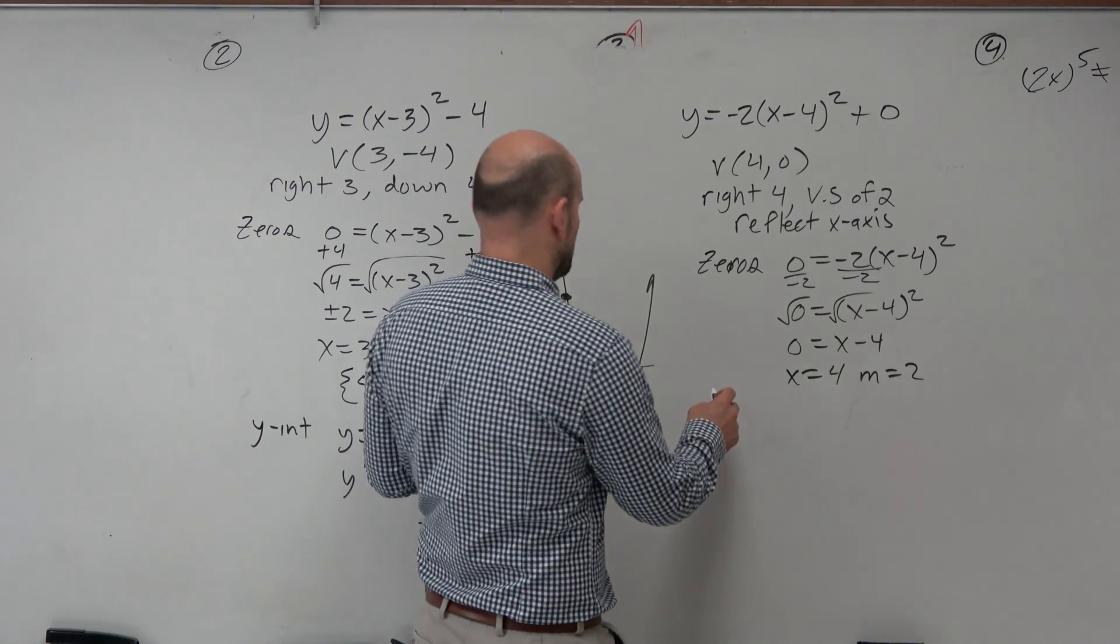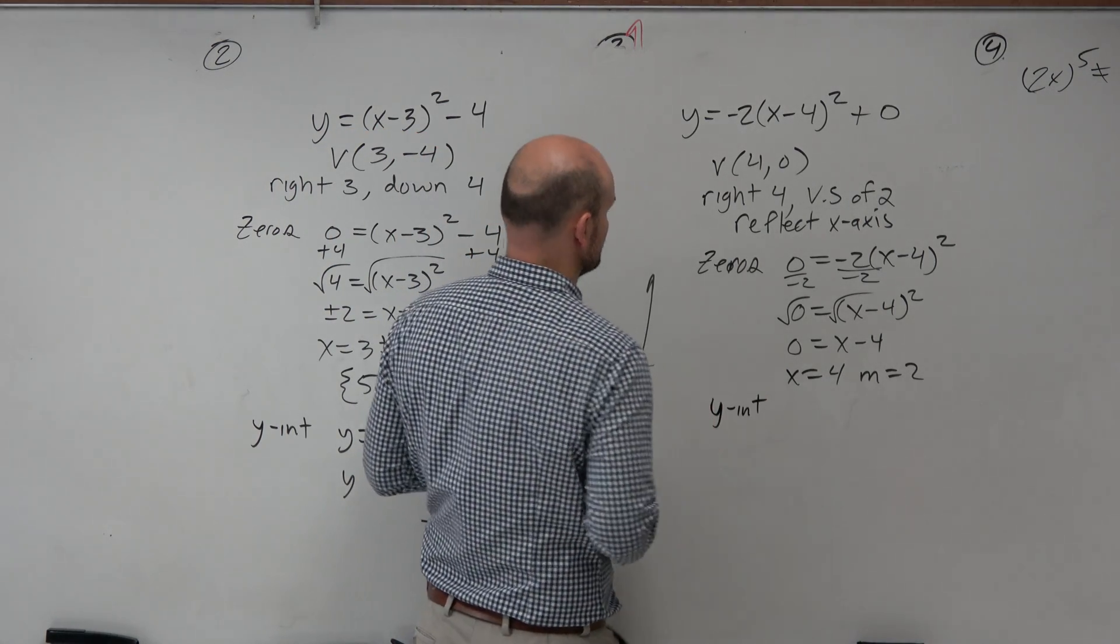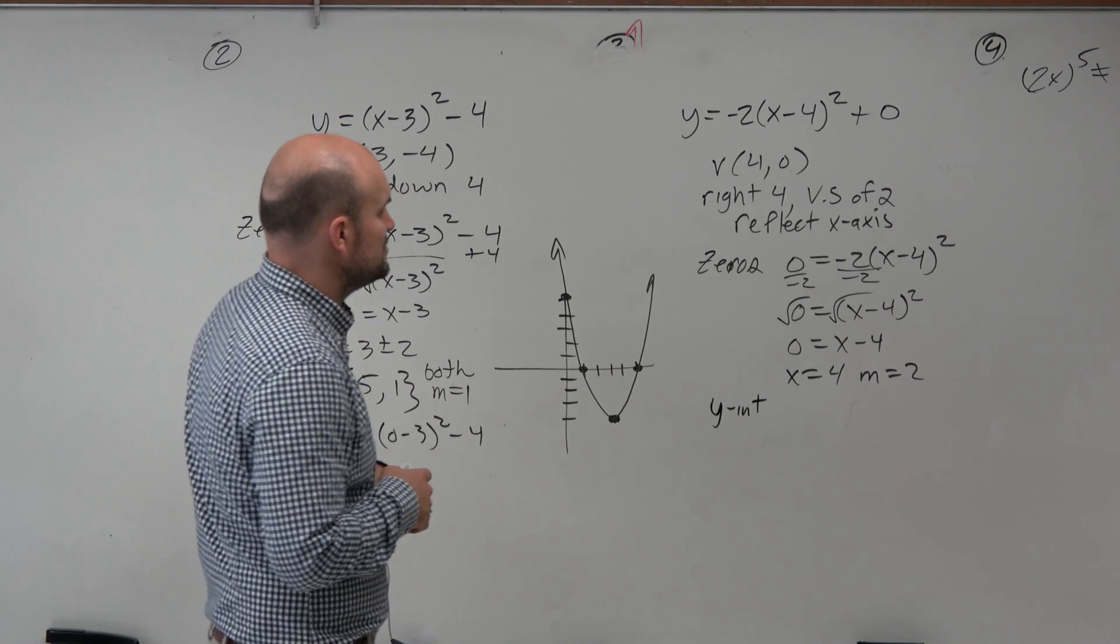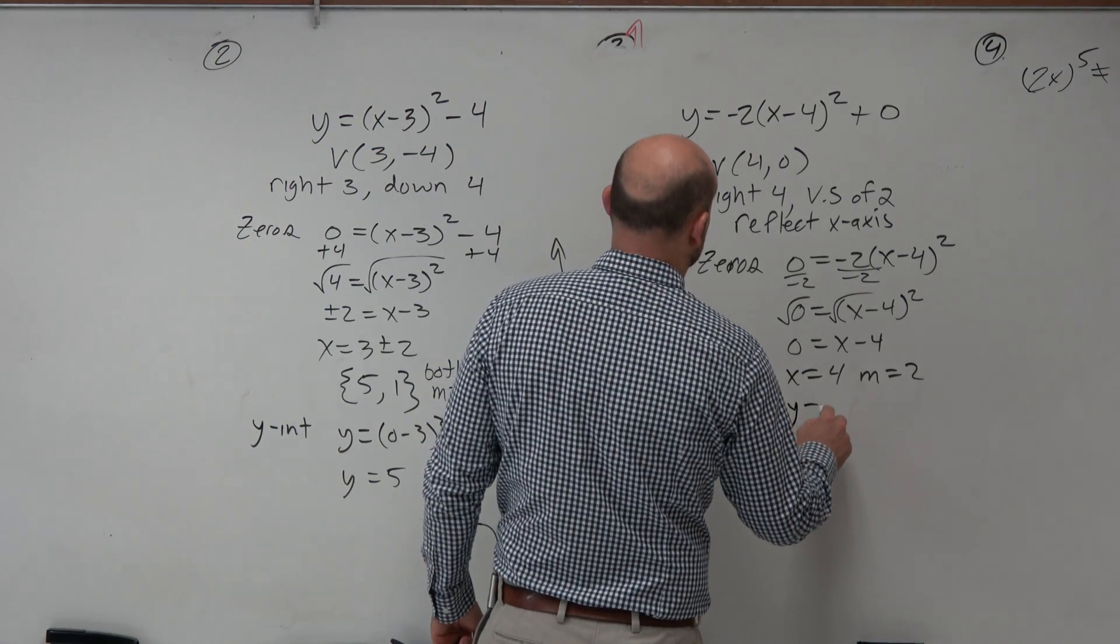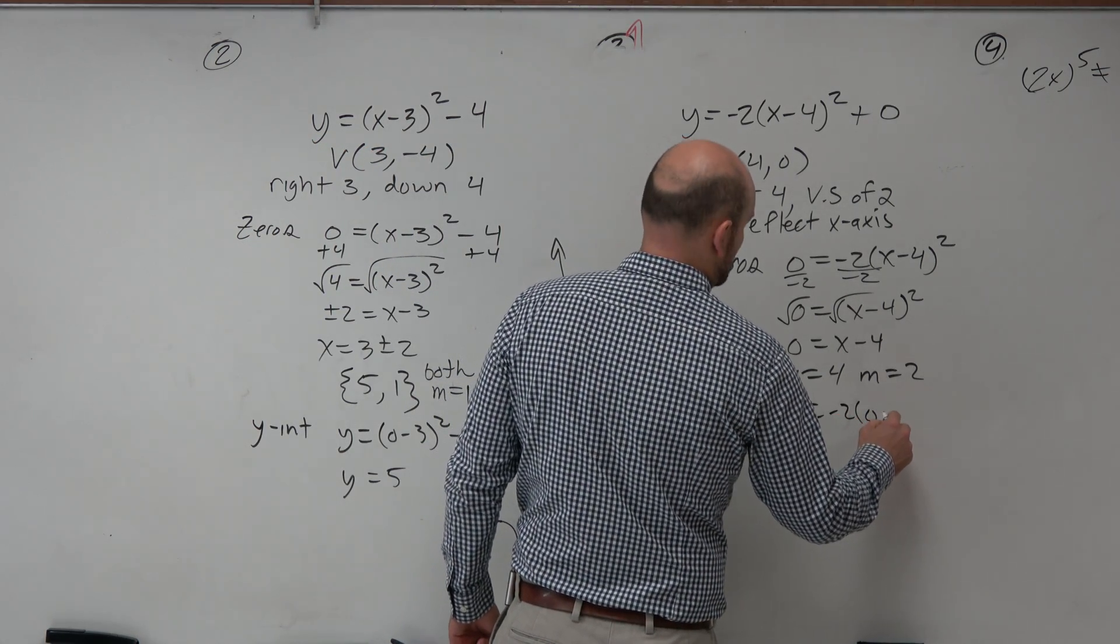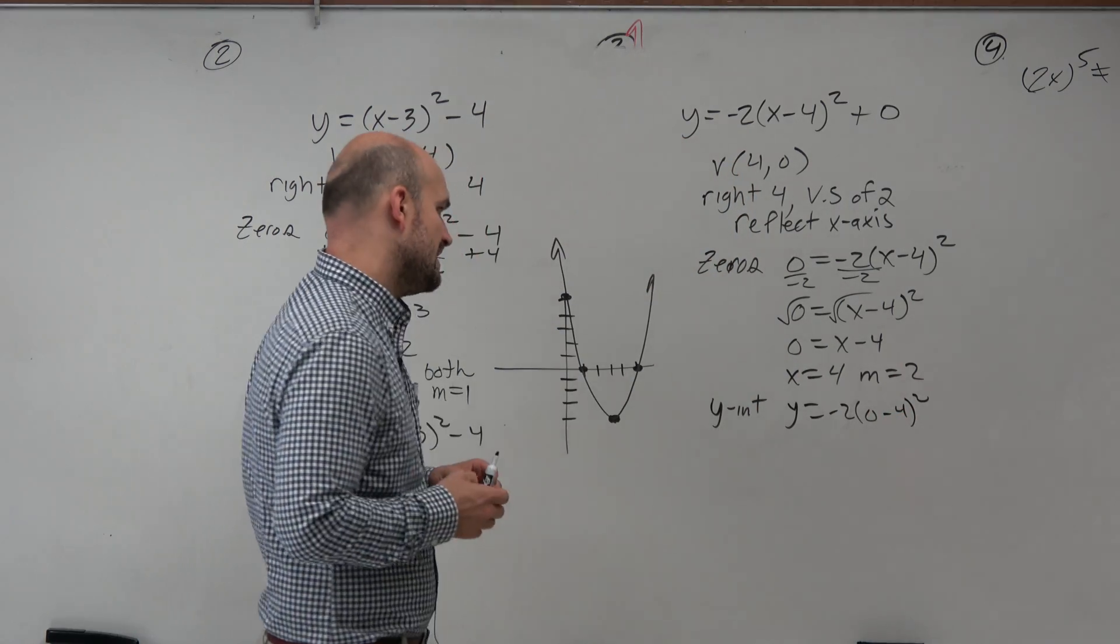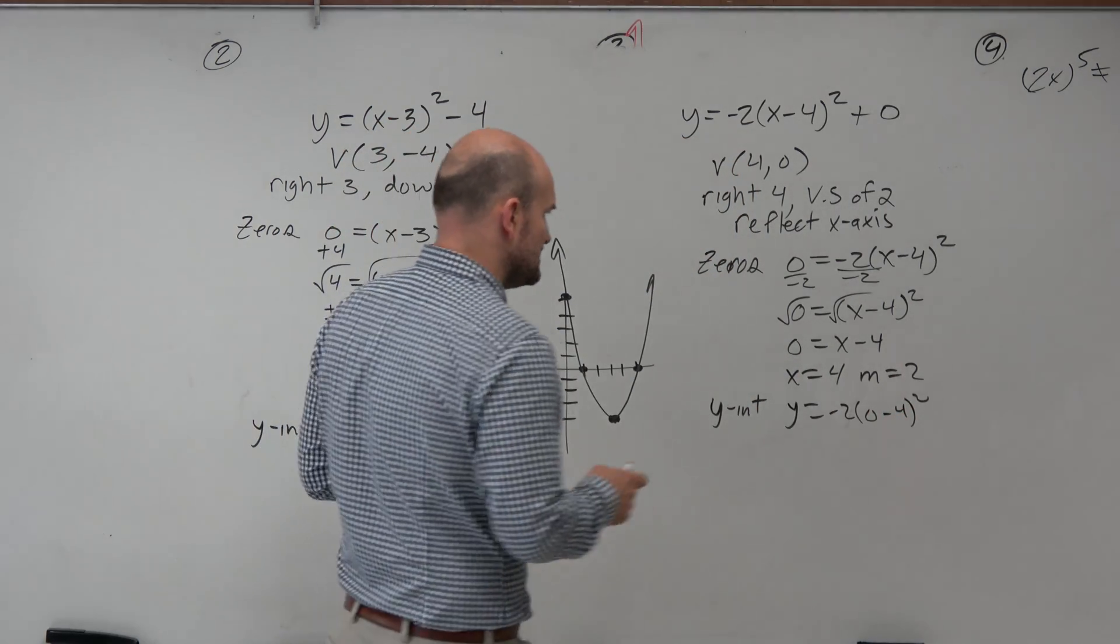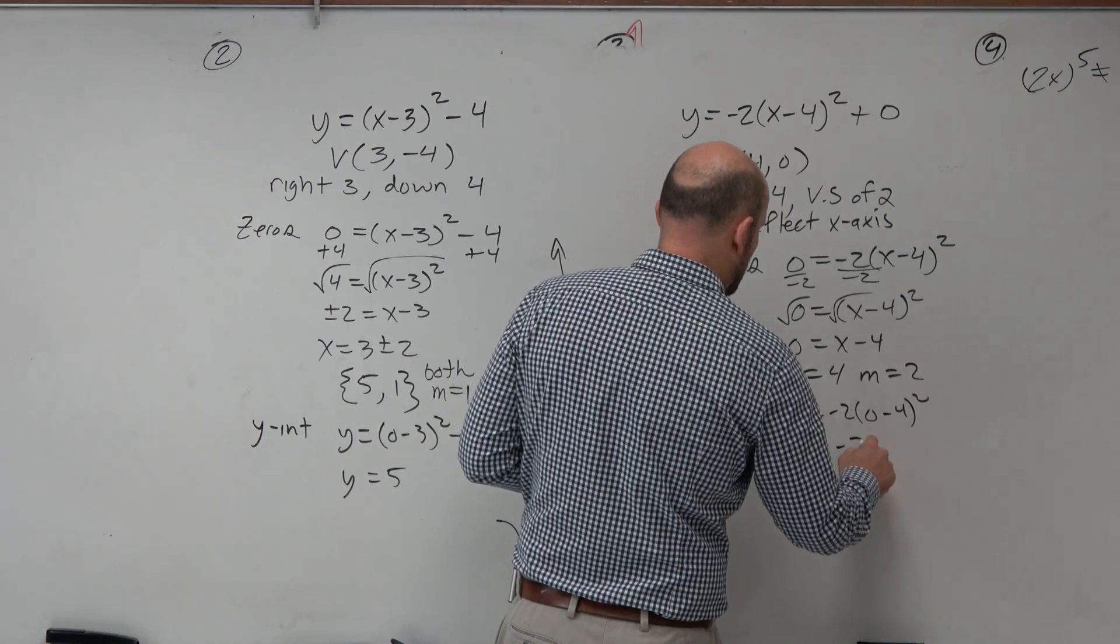So to find the y-intercept, you plug 0 in for x, so y is equal to negative 2 times (0 - 4)². 0 minus 4 squared is 16. 16 times negative 2 is negative 32.